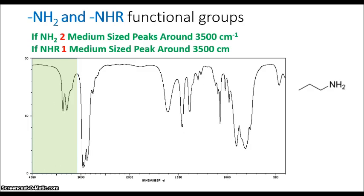Now let's talk about the primary amine and the secondary amine functional groups. If we have a primary amine, then we're going to see two medium sized peaks around 3500 cm⁻¹. The two peaks correspond to the two N-H bonds. That way you'll be able to remember that when you have NH₂, there's going to be two peaks.